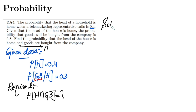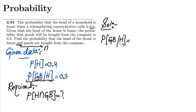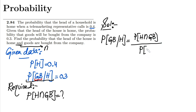Now, the solution: we can see that the conditional probability has been given to us. The formula for the conditional probability is — the probability of goods bought given that the head of a household is home equals the probability that the head of a household is home and goods are bought, divided by the probability that the head of a household is home.